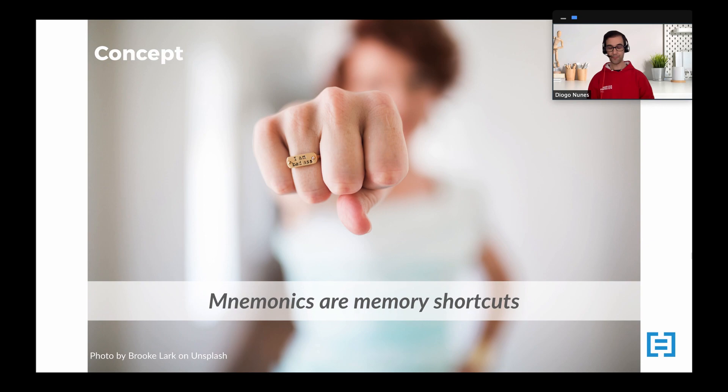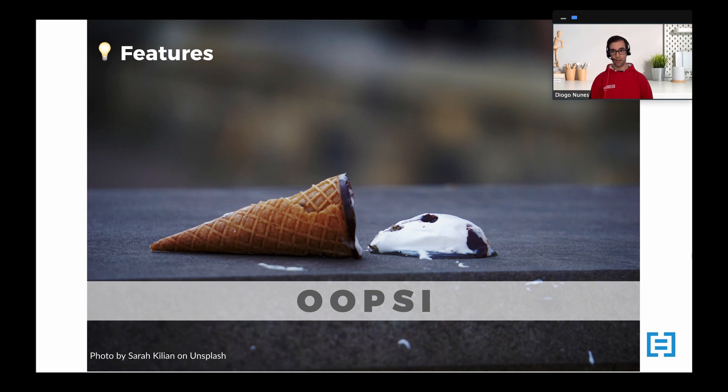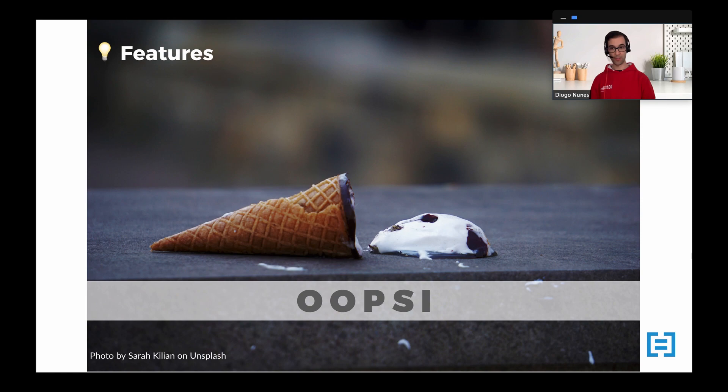Now let's see examples of how you can apply mnemonics at work. Let's assume that you are a product owner doing behavior-driven development, BDD, or specification by example, and you have a new feature and you want to describe it into scenarios. To avoid forgetting any important aspect of describing a scenario, you can use this mnemonic called OOPSIE, which will act as a trigger word for you to recall all those aspects.